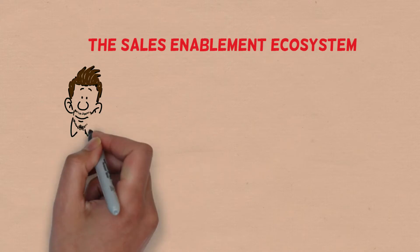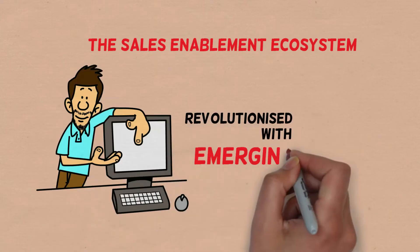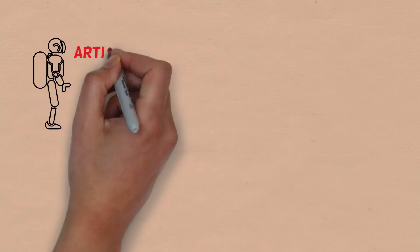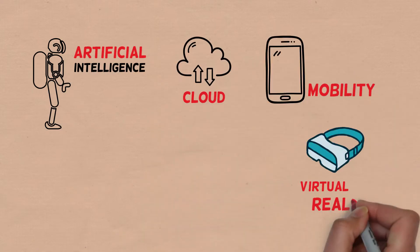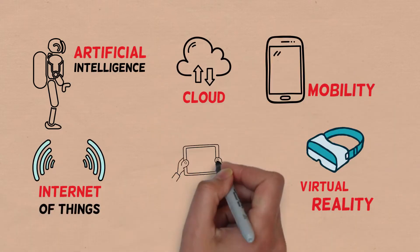The sales enablement ecosystem would be revolutionized with emerging trends such as artificial intelligence, cloud, mobility, virtual reality, internet of things, and big data analytics.